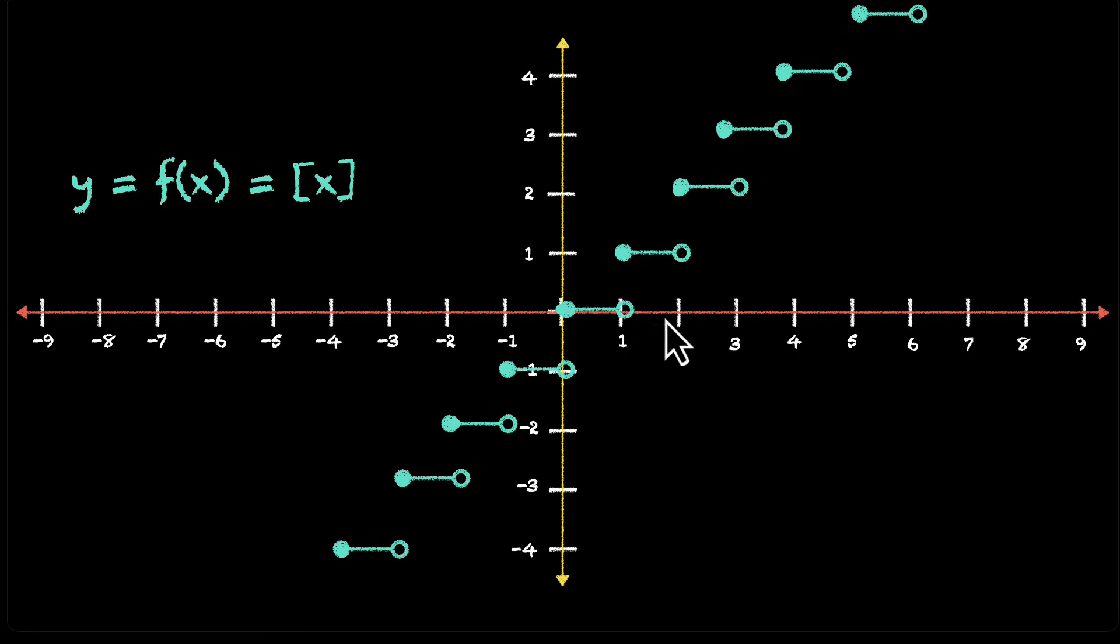Now, using this graph, can we figure out the domain and range? For domain, we need to ask ourselves, what are the values of x that are allowed for this function? Well, all values are allowed. So, this means the domain is all real numbers. Domain of f is x, where x belongs to R.